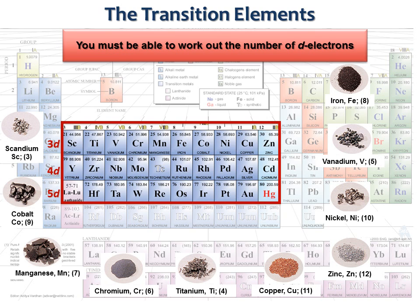Each group of D block metals consists of three members which is called a triad. For example, iron, ruthenium and osmium. The second and third row are the heavier D block elements, and ruthenium, osmium, rhodium, iridium, palladium and platinum are collectively called the platinum group metals.